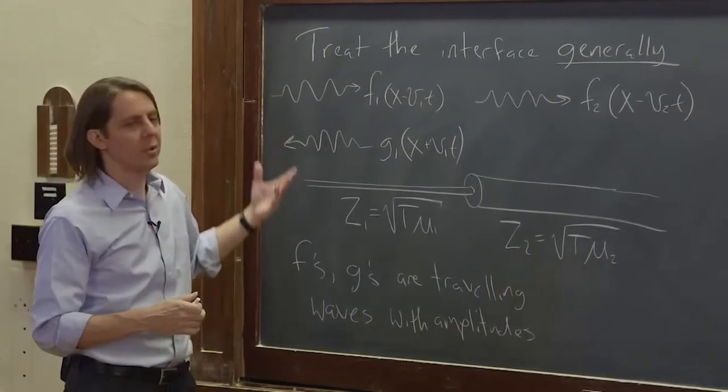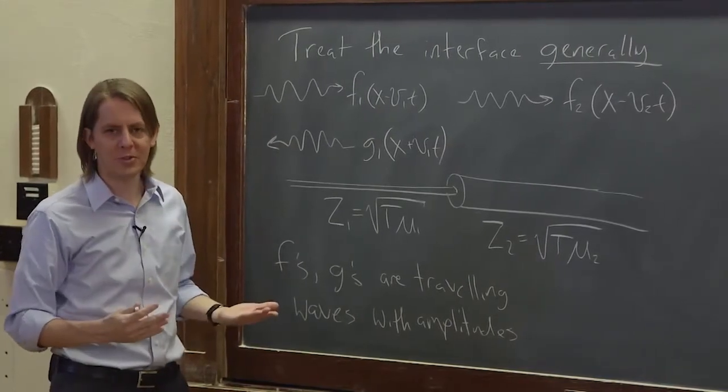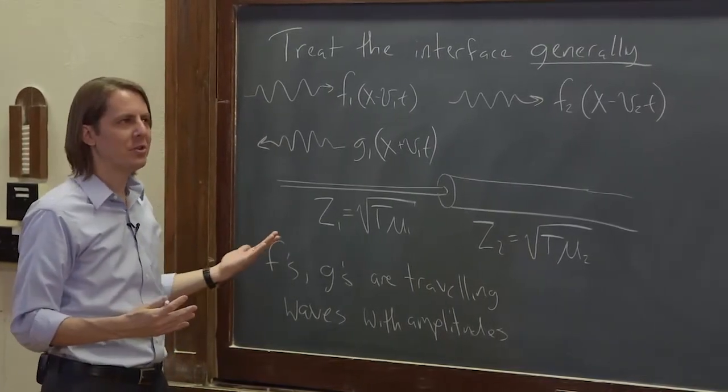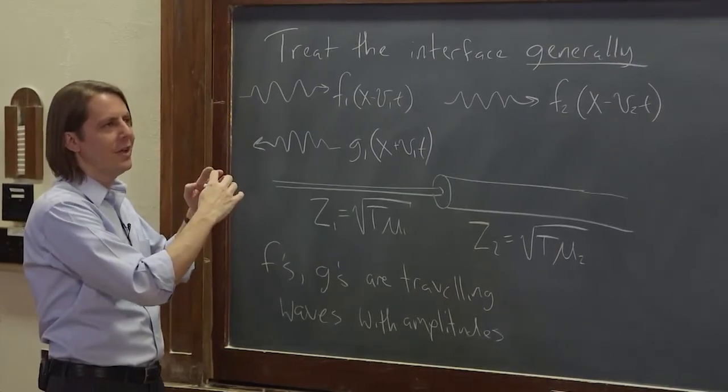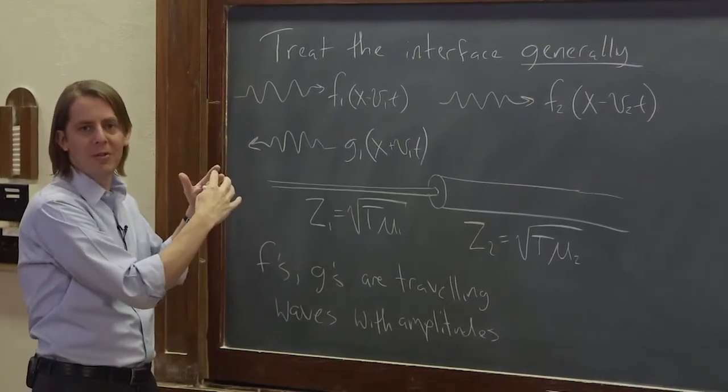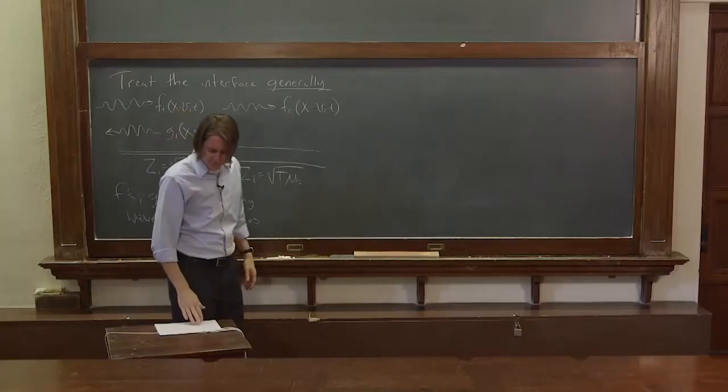And the reason is, a sinusoid has an amplitude, and any pulse shape you come up with you can make as a sum of a bunch of sinusoids. So if there's no dispersion, and that shape goes down by a factor of two in its height, that's basically all the sinusoids going down by a factor of two. So you can call it an amplitude, even though it's not necessarily a sine.